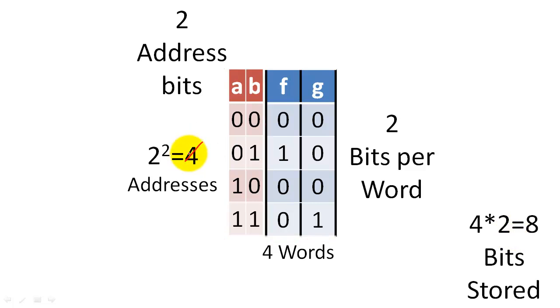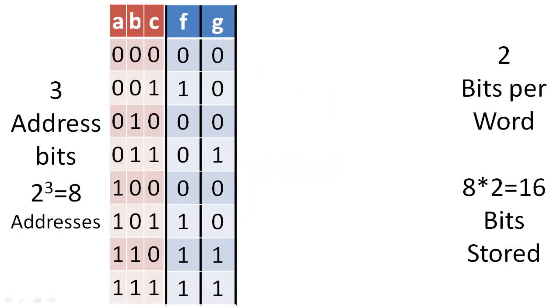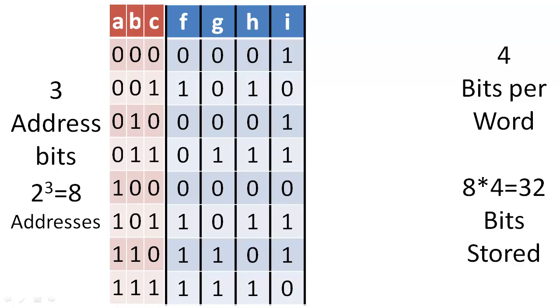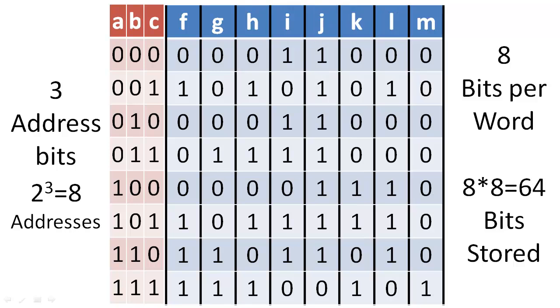If we want to double the number of addresses in a storage device, we simply need to add one additional address bit. In contrast, if we want to double the number of bits per word, we need to double the number of bits stored at each address.